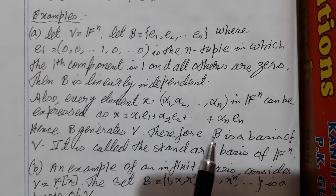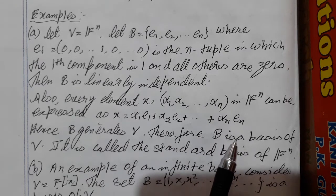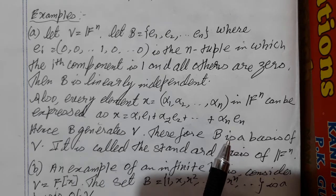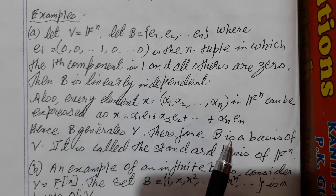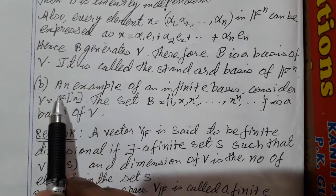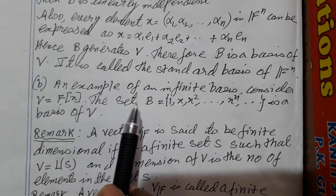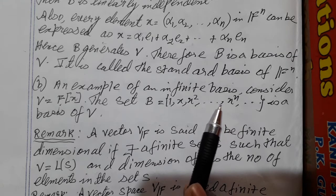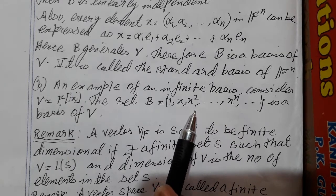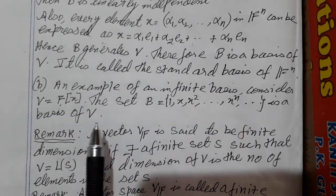If I take R2, the standard basis are (1,0) and (0,1). If I take R3, the standard basis are (1,0,0), (0,1,0), and (0,0,1). So these are the standard basis of R3. Another example: if I take the vector space to be the set of polynomials, then this set is linearly independent and it spans the whole vector space, so hence it's a basis for V.